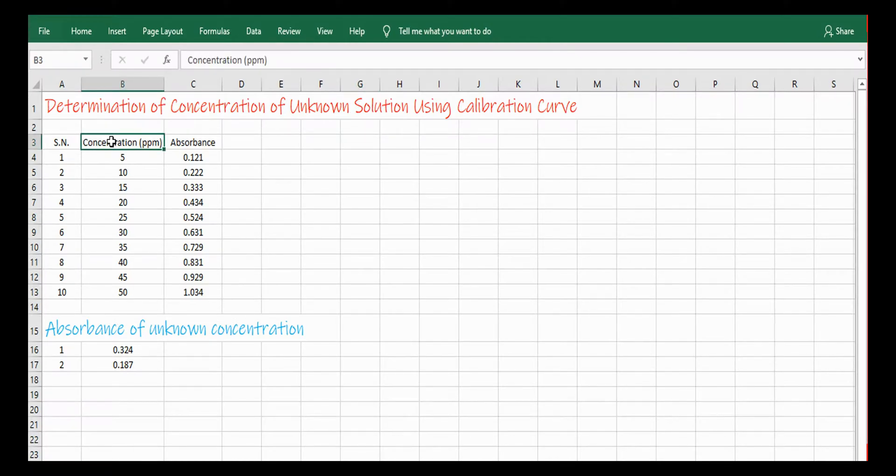I made different concentration of solution which is 5 ppm, 10 ppm, 15 ppm, 20 ppm, 25 ppm, 30 ppm, 35 ppm, 40 ppm, 45 ppm, and 50 ppm. And I have noted their absorbance value from spectrophotometer.